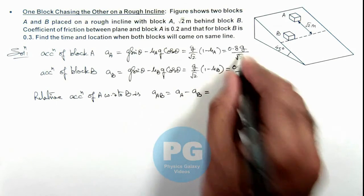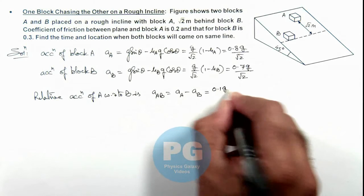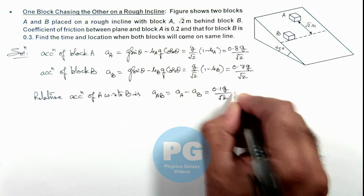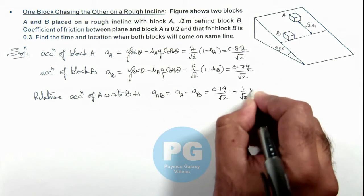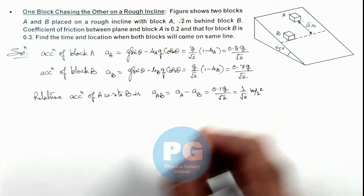So this will be 0.1 g/√2, that is 1/√2 meter per second square. Here I have taken the value of g to be 10.